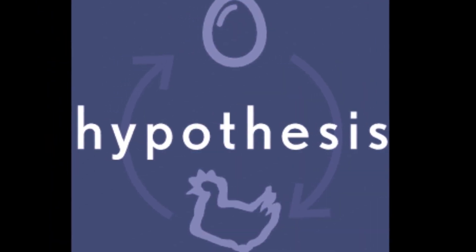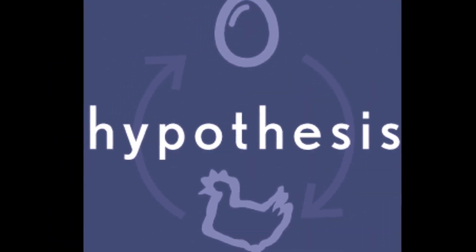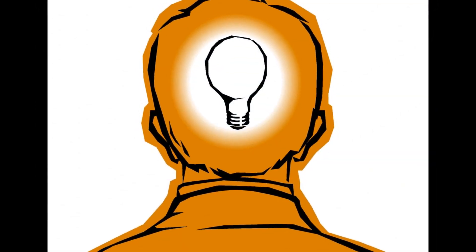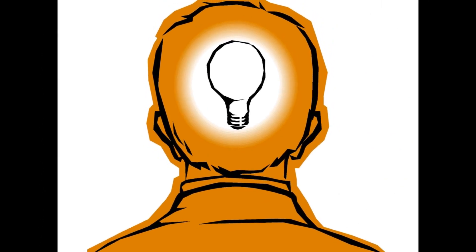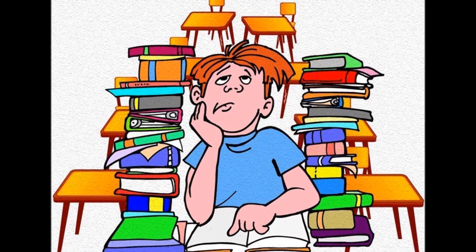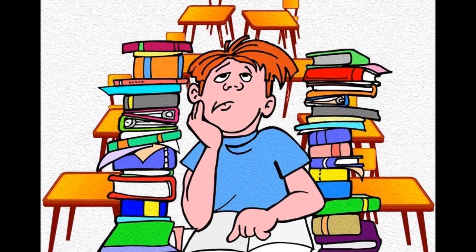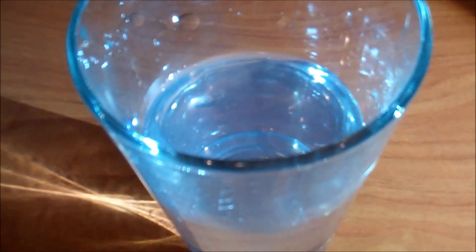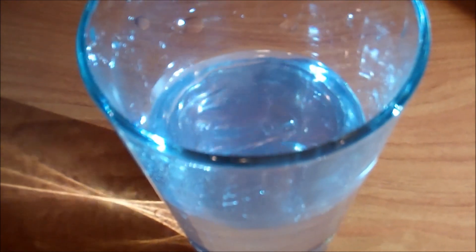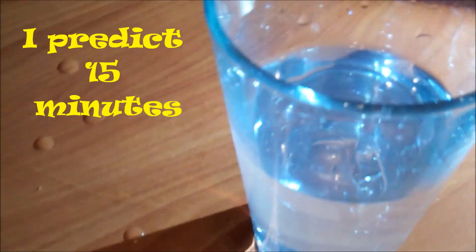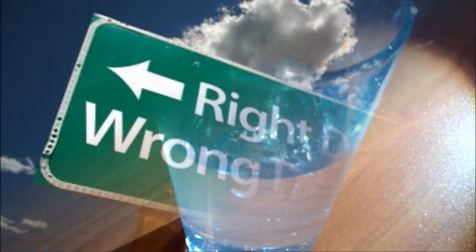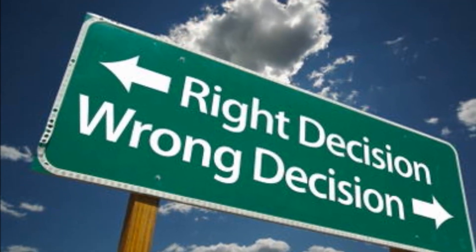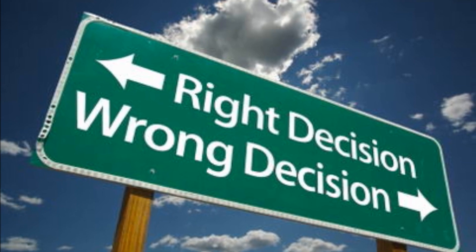The next step in the scientific method is to develop a hypothesis. A hypothesis is an educated guess about what you think will happen. After some research and thinking about what I'm doing exactly, I predict that it will take 15 minutes to melt my ice cube. This is my hypothesis. It is based on my research and my knowledge. My hypothesis might be correct, and it might not be — that is why I do the next step.